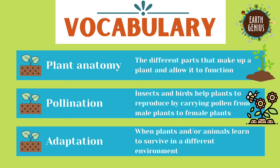Pollination is when insects and birds help plants to reproduce by carrying pollen from male plants to female plants. There are many animals that help with the process of pollination, like butterflies, bats, hummingbirds, and more.